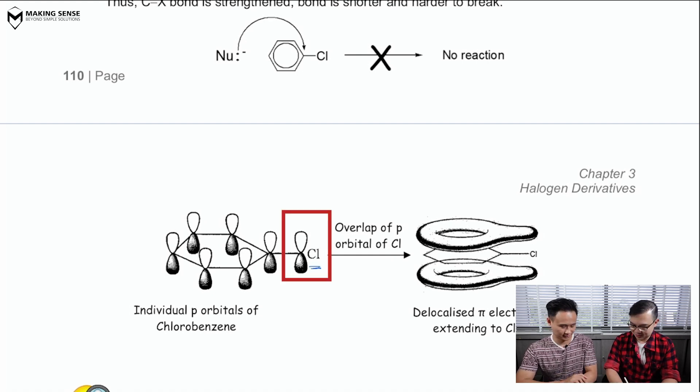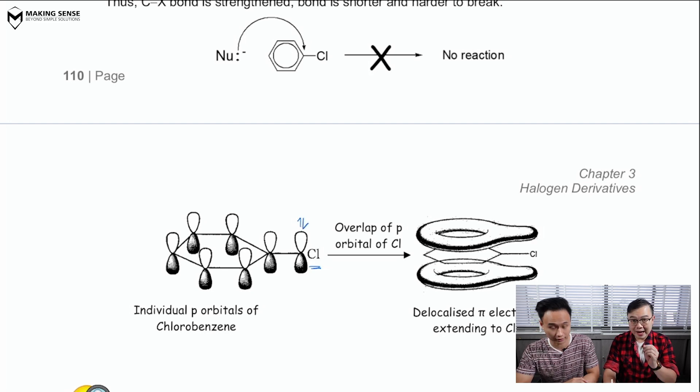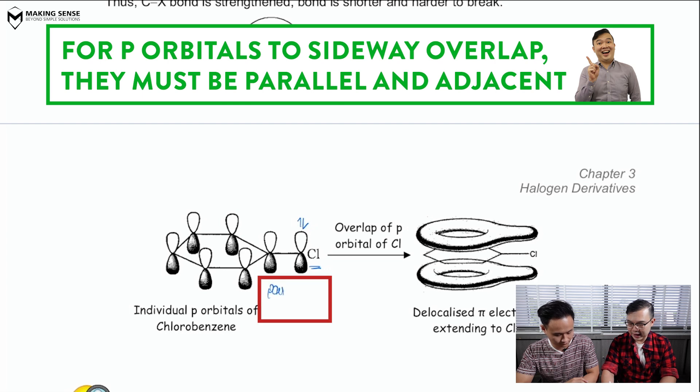Can you remind me how many lone pairs does the Cl have over here? Well, it has three lone pairs. Right. So, one of them is going to reside in the p orbital and more importantly, this p orbital is going to be parallel and adjacent to that of the benzene.